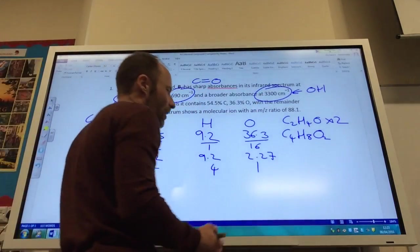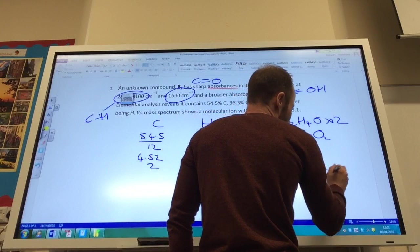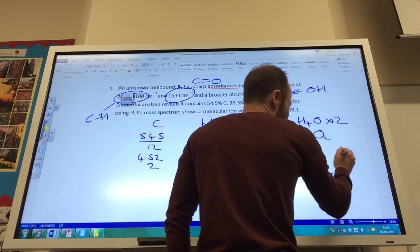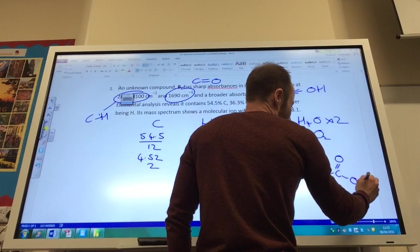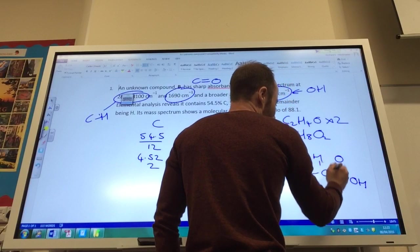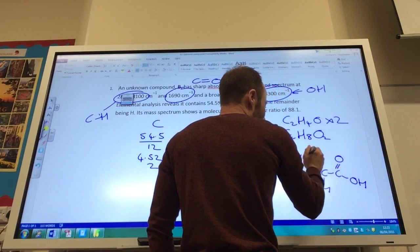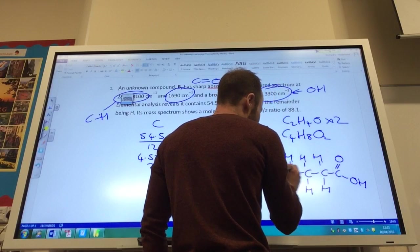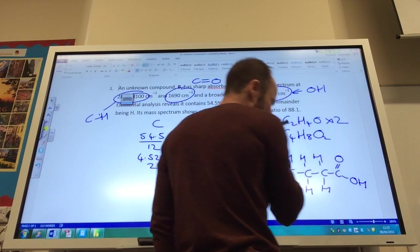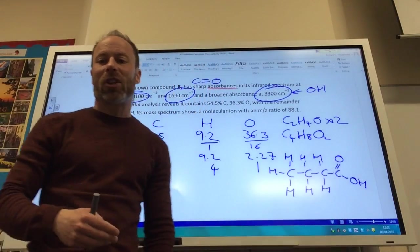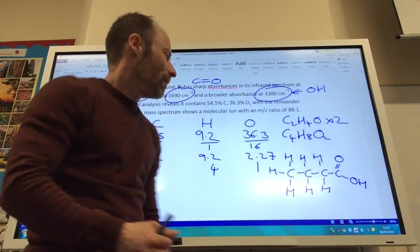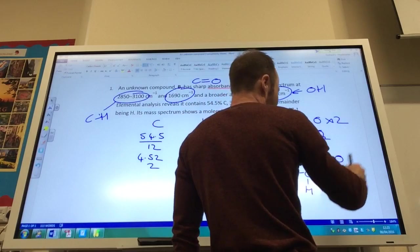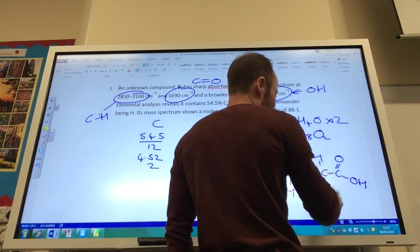So what's a possible structure? Well, one possible structure would be this guy: butanoic acid. It may not be, I haven't got enough information to tell me about how the carbon chain is actually built up. But let's have a look. I've got four carbons, one, two, three, four, five, six, seven, eight hydrogens and two oxygen, so it fits the formula, it fits the IR data.